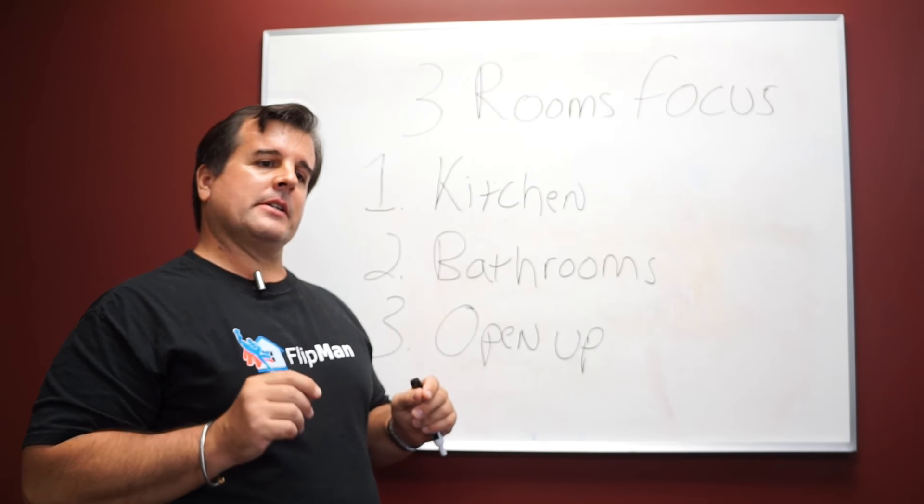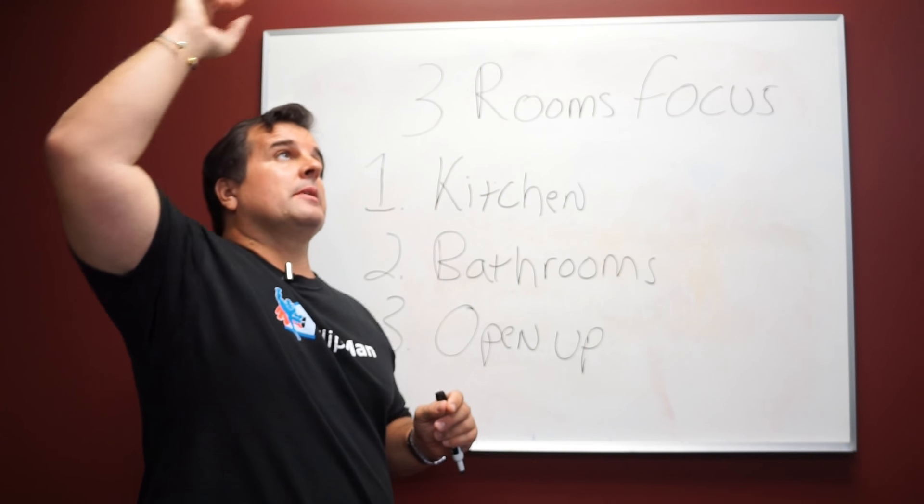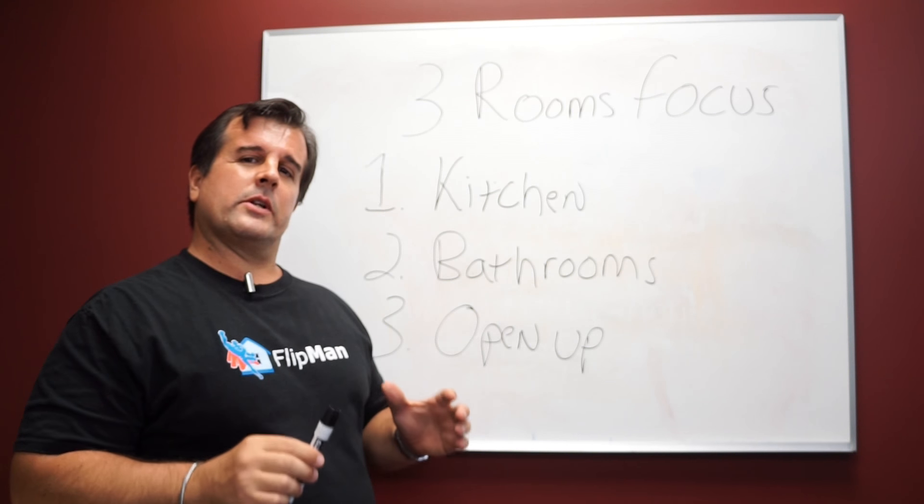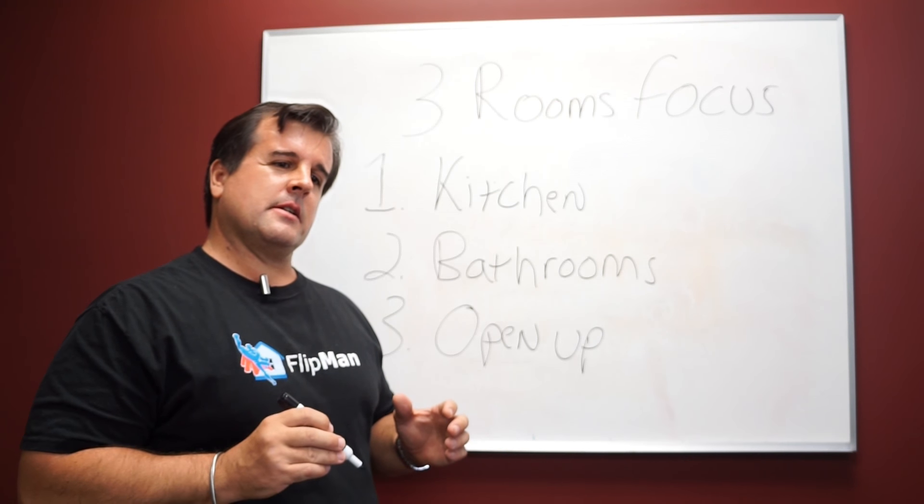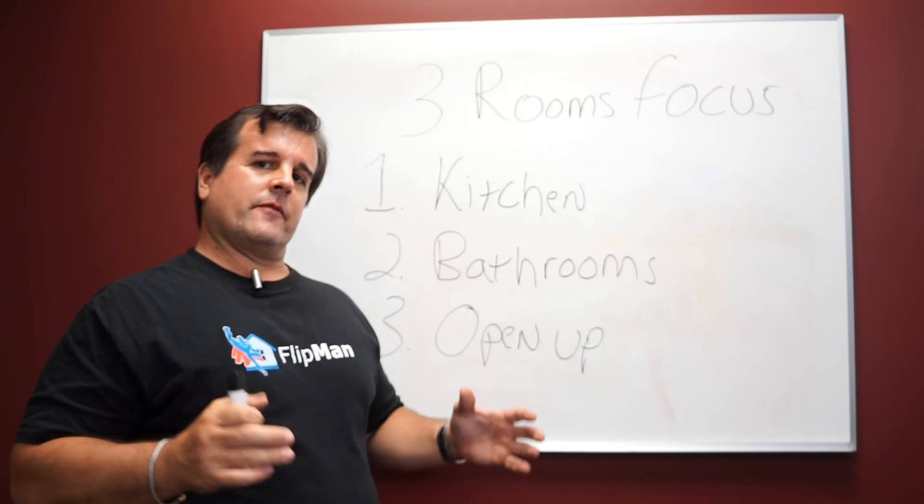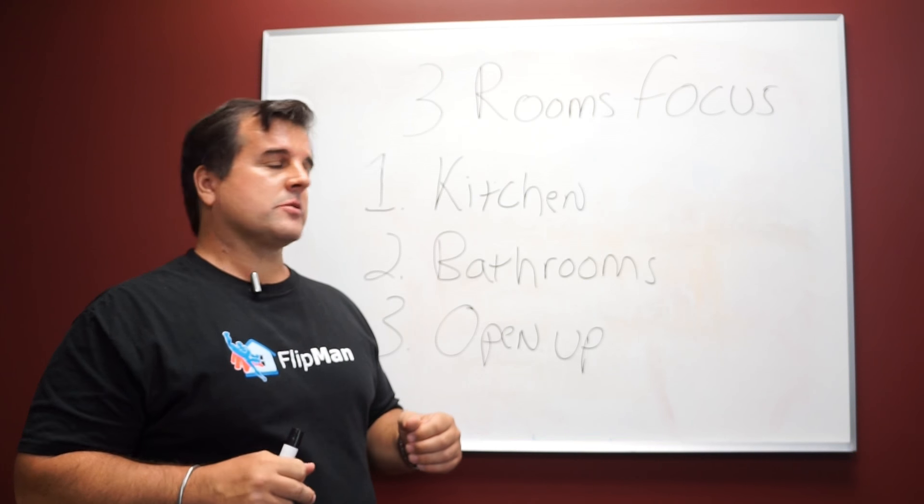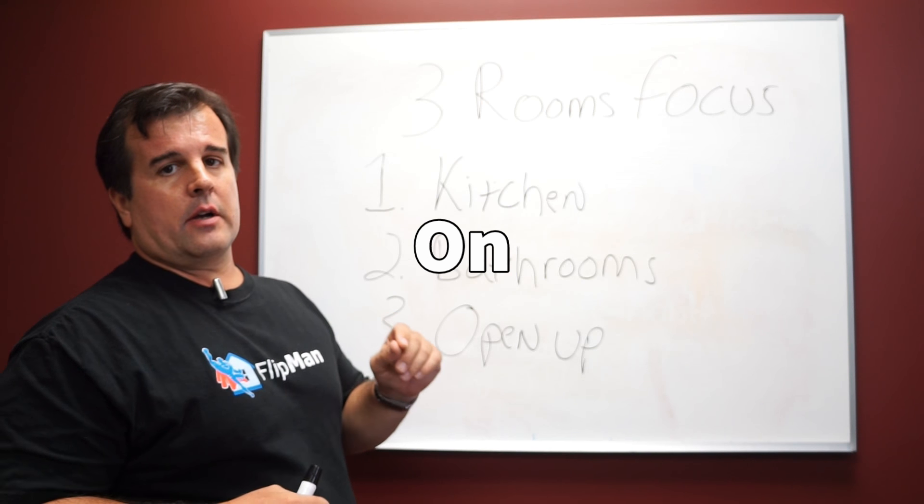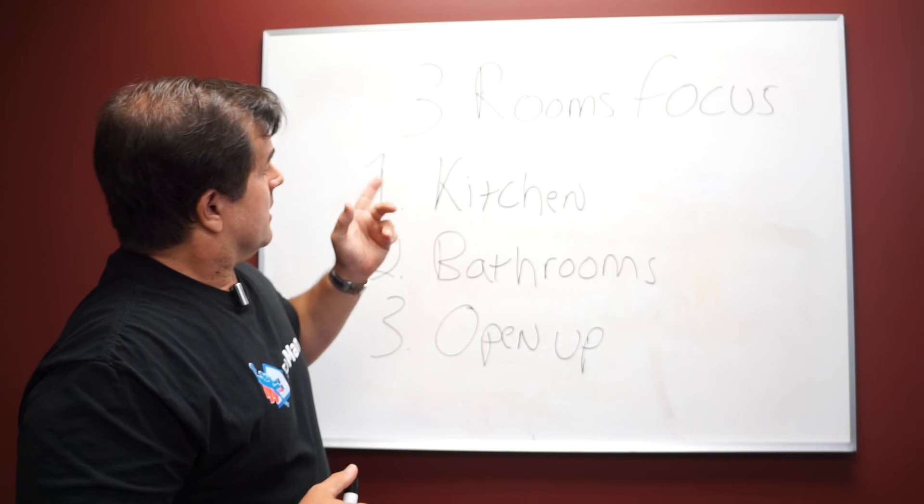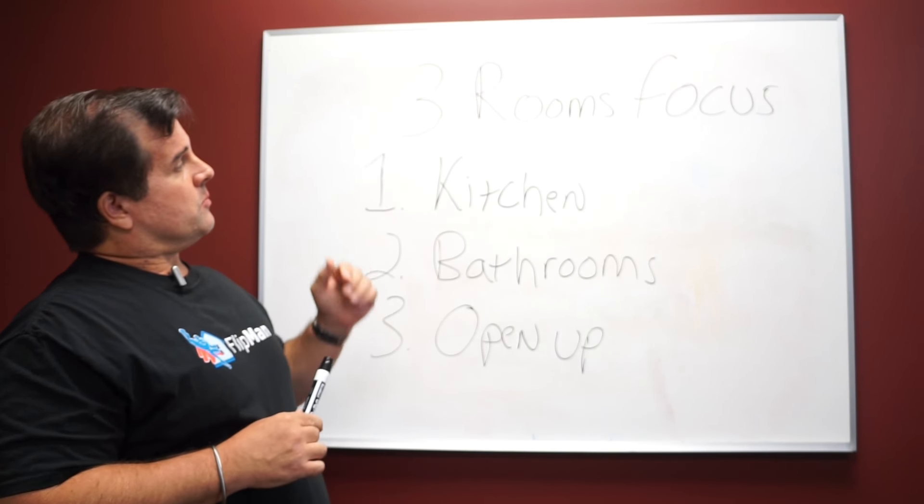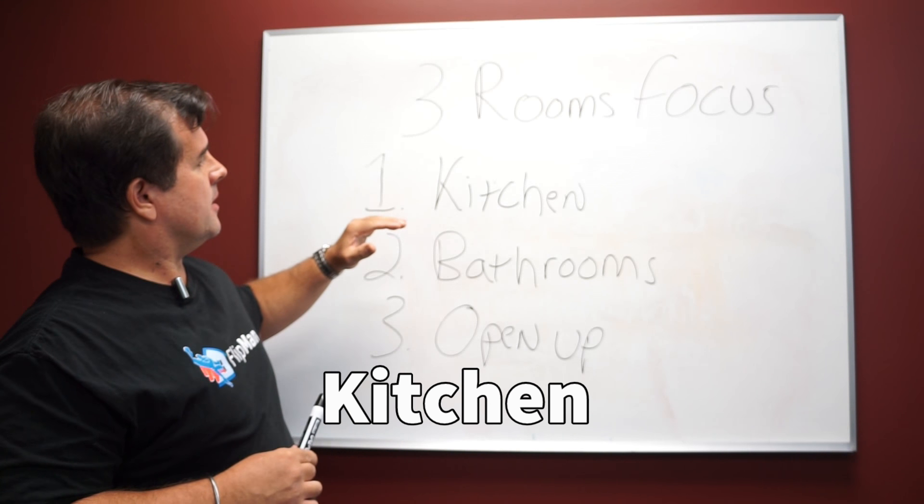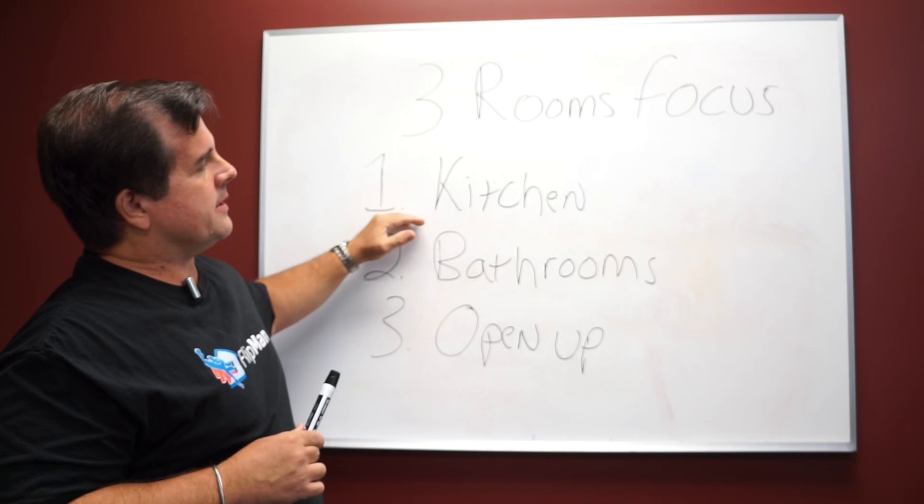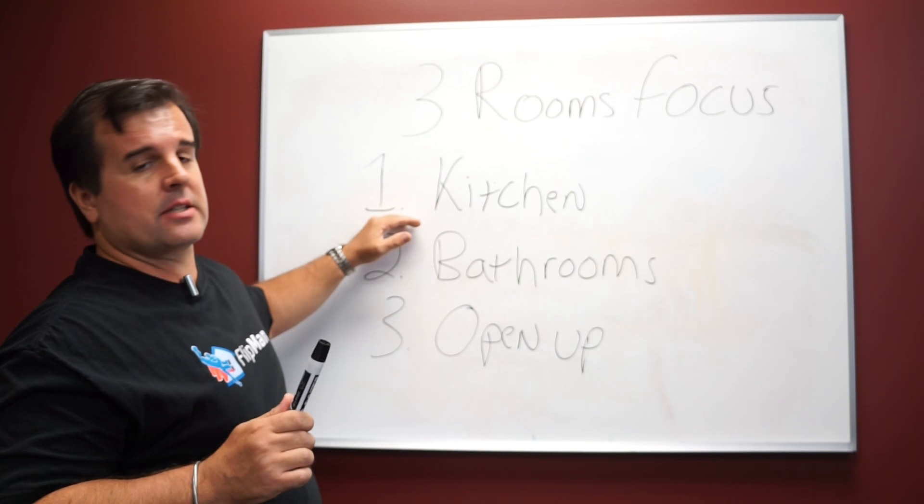So we got the kitchens, the bathrooms are definitely the top two. The third thing would be more of an area. The open floor plan concept is big throughout the country. What I typically do is open up everything. So I open up the kitchen area. When you walk in the house, the sitting area, the formal living room. Sometimes with these old homes built in the sixties and seventies, they have a dividing wall.